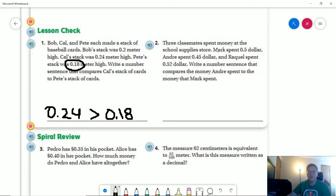Number two: three classmates spent money at the school supply store. Mark spent five tenths of a dollar, Andre spent forty-five hundredths, and Raquel spent fifty-two hundredths. Write a number sentence comparing Andre's spending to Mark's.